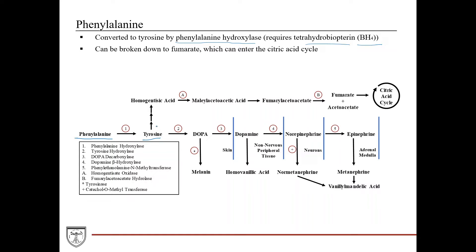Looking at the diagram, tyrosine through a series of steps gets converted into homogentisic acid, which is then further converted into maleylacetoacetic acid, catalyzed by the enzyme homogentisate oxidase, shown here with letter A. Maleylacetoacetic acid is converted into fumarylacetoacetate, which is then converted by fumarylacetoacetate hydrolase into fumarate and acetoacetate. Importantly, the end product of tyrosine breakdown is fumarate, which can then enter the citric acid cycle.